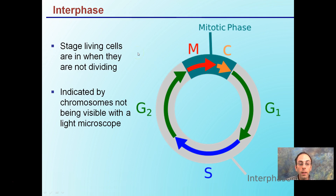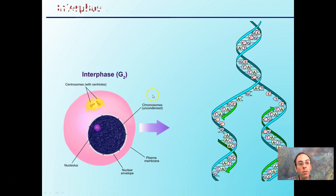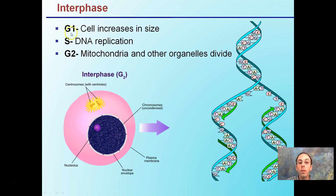Interphase is the stage where living cells are when they're not dividing. It's indicated by chromosomes not being visible with a light microscope. G1 refers to when the cell increases in size; S is DNA replication; and G2 is when mitochondria and other organelles begin to divide before the cell officially enters mitosis.